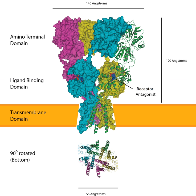AMPARs are composed of four types of subunits, designated as GLUA-1 (GRIA-1), GLUA-2 (GRIA-2), GLUA-3 (GRIA-3), and GLUA-4 (GRIA-4), which combine to form tetramers. Most AMPARs are heterotetrameric, consisting of a symmetric dimer of dimers of GLUA-2 and either GLUA-1, GLUA-3, or GLUA-4.